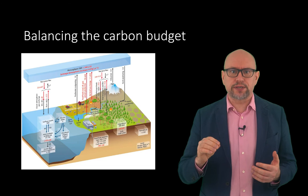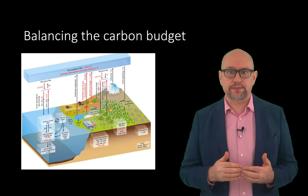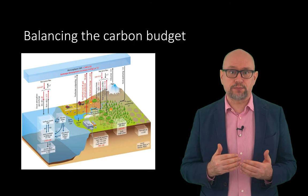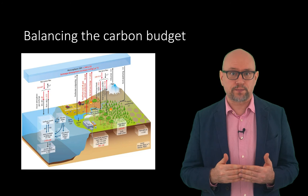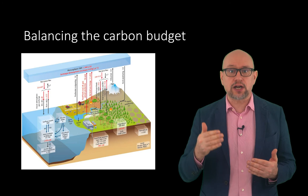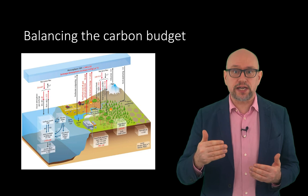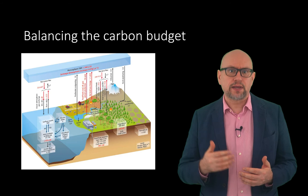Some of this additional anthropogenic carbon is taken up by the land and the ocean — about 5 petagrams of carbon per year — while the remainder, 4 petagrams of carbon per year, is left in the atmosphere, explaining the rising atmospheric concentrations of CO2. The red numbers in the reservoirs show the cumulative changes in anthropogenic carbon from 1750 to 2011, where a positive change indicates that the reservoir has gained carbon.